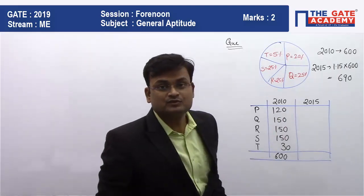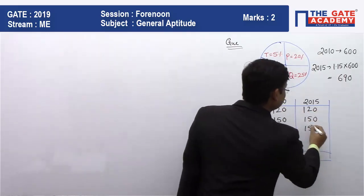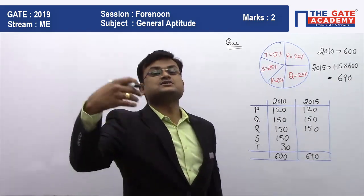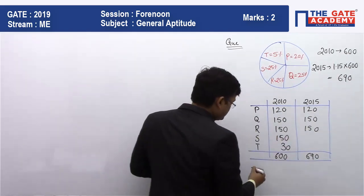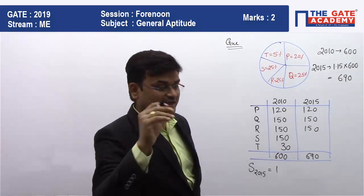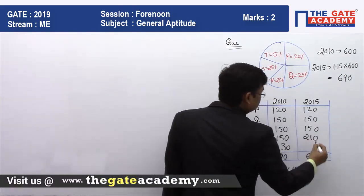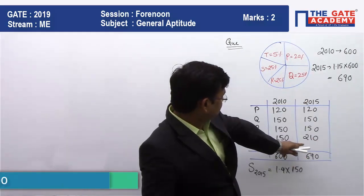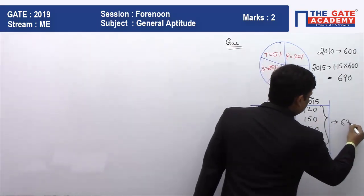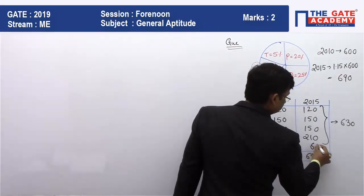The total for 2015 is 690. S category increased by 40%, so S in 2015 is 1.4 × 150 = 210. Adding all categories — P (120), Q (150), R (150), S (210) — gives a sum of 630. Therefore, T = 690 − 630 = 60.